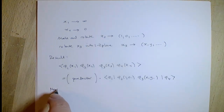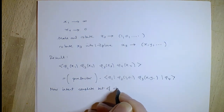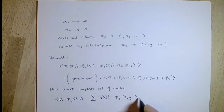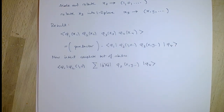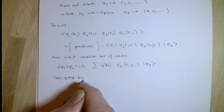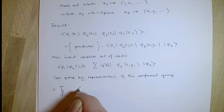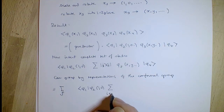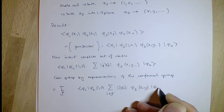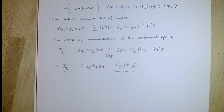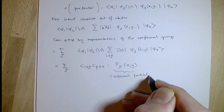That's where conformal blocks or conformal partial waves come in. We insert a complete set of states in a representation of the conformal group, and sum over all representations to get the whole function back. The four-point function is the sum over representations of insertions — we sum over states in each representation to give a projector — yielding two constants from three-point functions times a function called a conformal partial wave or conformal block.